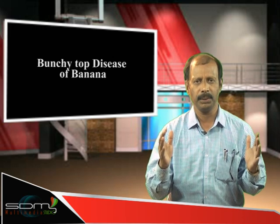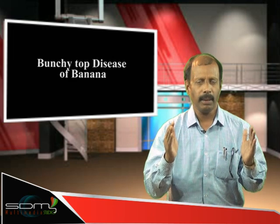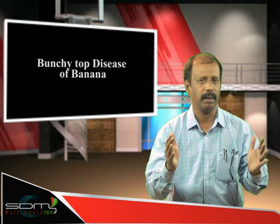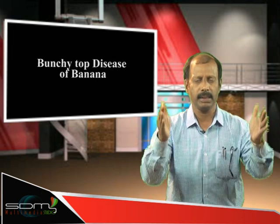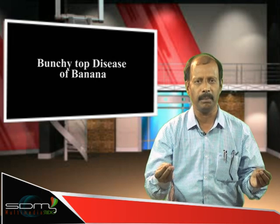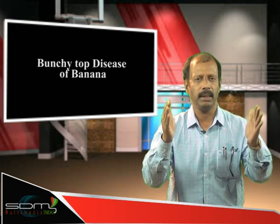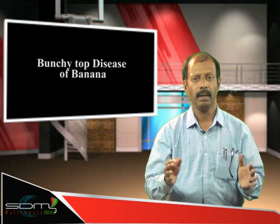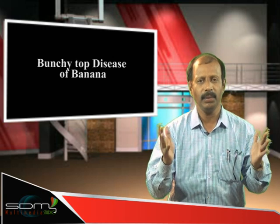Now let us look into the major symptoms of the disease. Banana plants affected by this virus show a stunted pseudostem. In banana, the stem is normally underground, whereas the culm-like structure we see above ground is the pseudostem. We can see deformation in the stem — it is almost stunted.